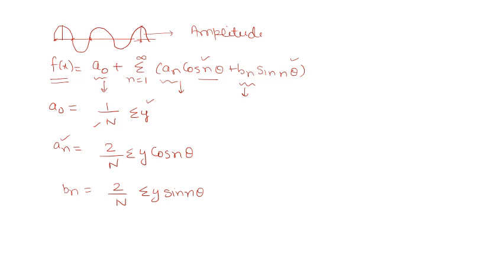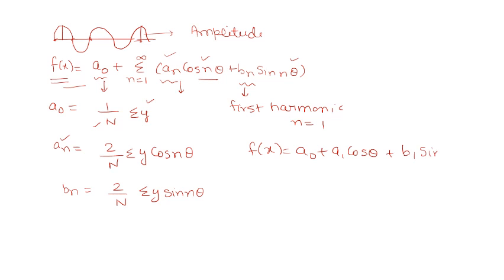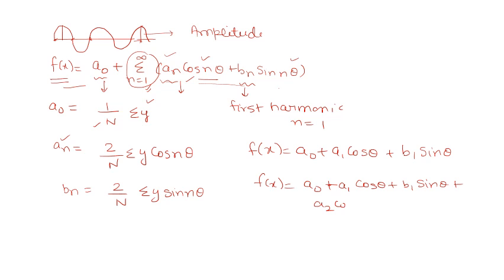A question may ask you to find the first harmonic, which means n equals 1. Substituting n=1 gives: f(x) = a₀ + a₁·cos θ + b₁·sin θ. For the second harmonic, you continue the summation and add a₂·cos 2θ + b₂·sin 2θ, since this is a summation from 1 to infinity and you expand it term by term.